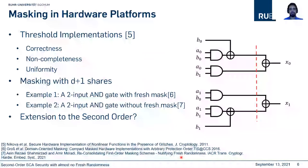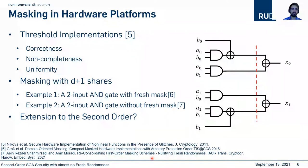It has been shown that we can have a first-order secure two-input AND gate without a fresh mask. The question is: can we extend it to the second order? I recommend watching my presentation on the paper 'Reconciling First Order Masking Scheme,' because the current work is an extension of that algorithm.